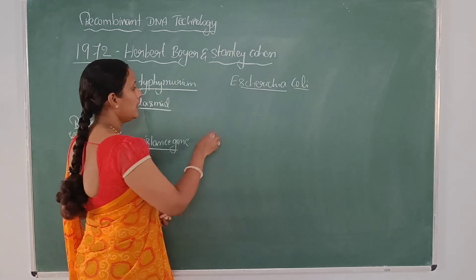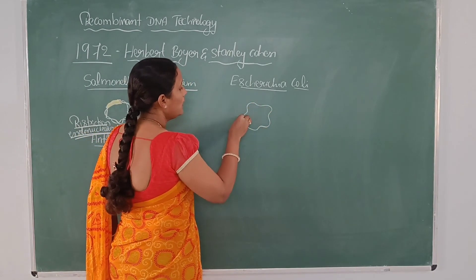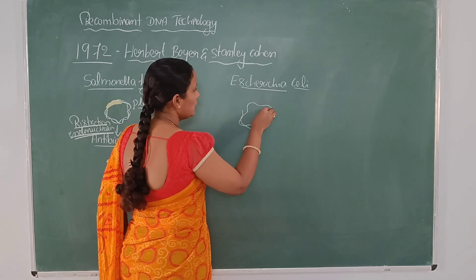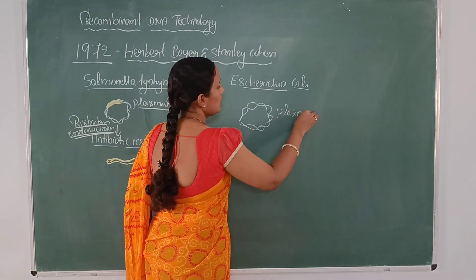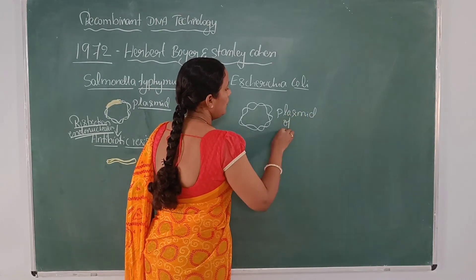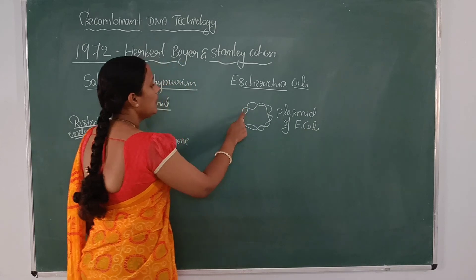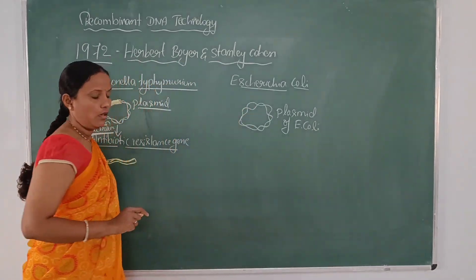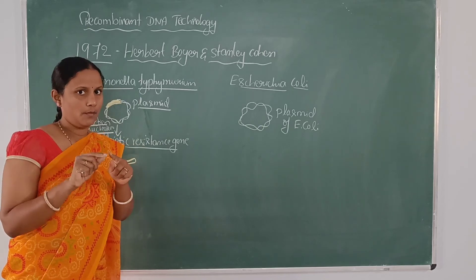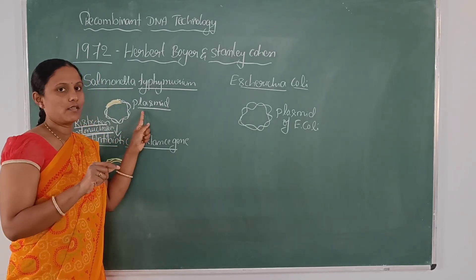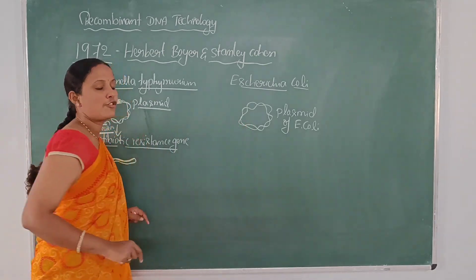They isolated the plasmid of Escherichia coli. This is a plasmid of E. coli. Here it is a closed one, it is not having free ends. It is a circular DNA molecule. For attaching this, this plasmid should have cuts.